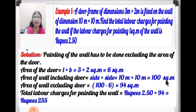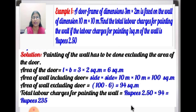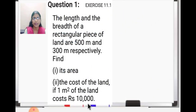Area of the wall excluding the door = 100 − 6 = 94 m². Now, total labor charges for painting the wall = 94 × ₹2.50. First multiply ignoring the decimal, then place the decimal at the end. The answer is ₹235. Please check this answer and do this question in your maths notebook.